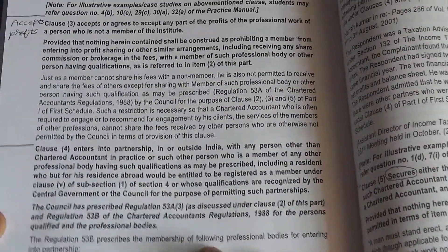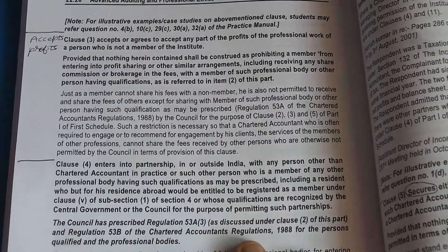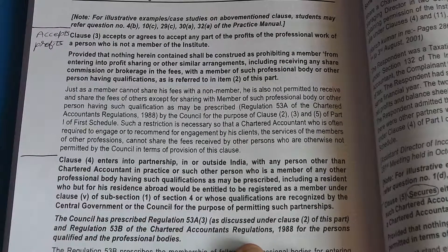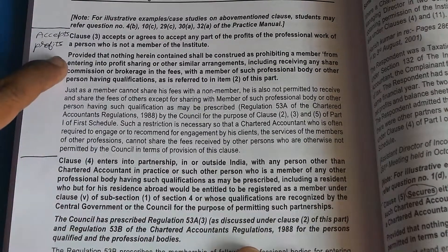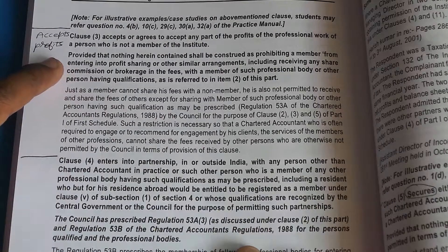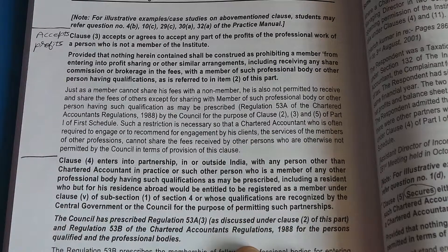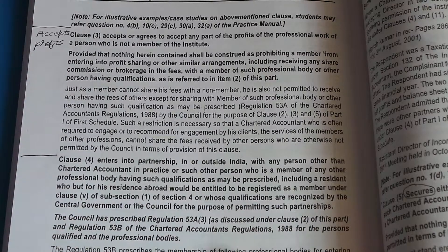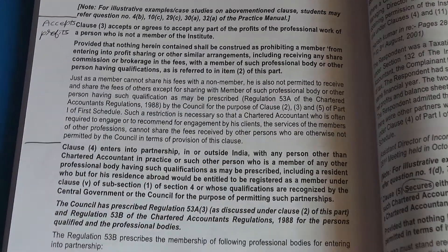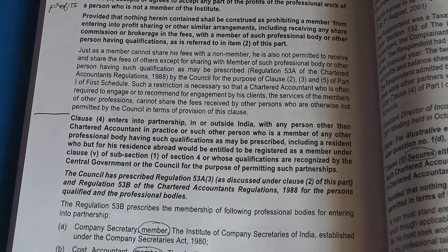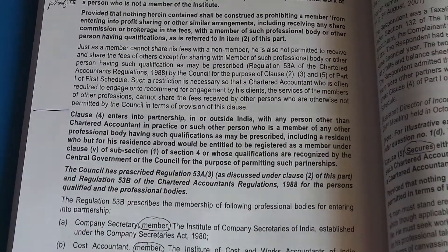Clause 3 is the opposite of Clause 2. While Clause 2 dealt with sharing earnings, Clause 3 deals with accepting earnings. A Chartered Accountant can only accept a share of earnings from the same limited set of persons specified under the regulation; accepting earnings from anyone outside this set constitutes professional misconduct.